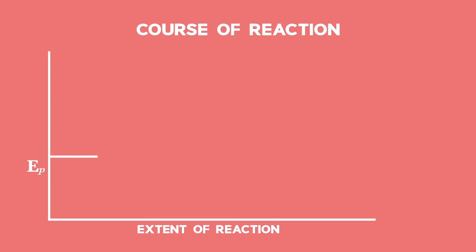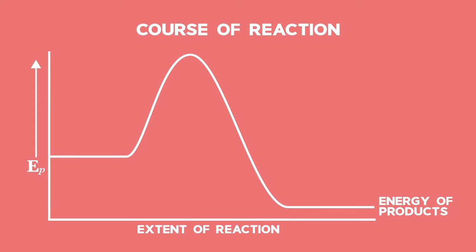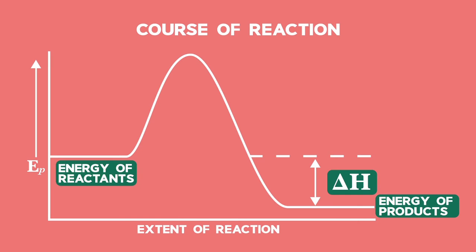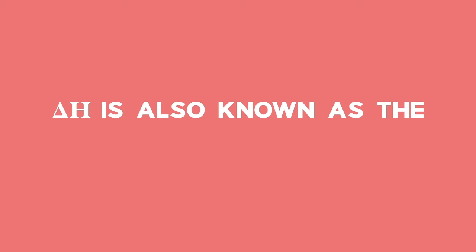The graph represents an exothermic reaction. As may be seen, the products have less energy than the reactants and so the value of delta H will be negative. Delta H is the difference between the energy of the products and the energy of the reactant. Delta H is also known as the heat of enthalpy.